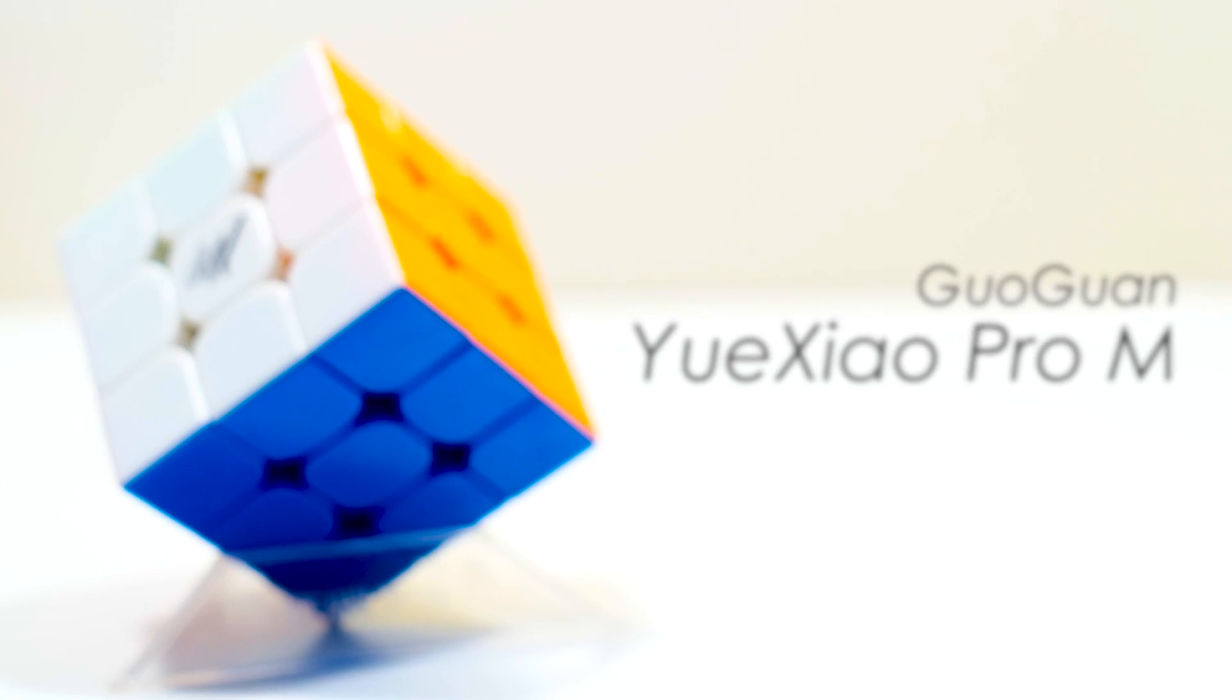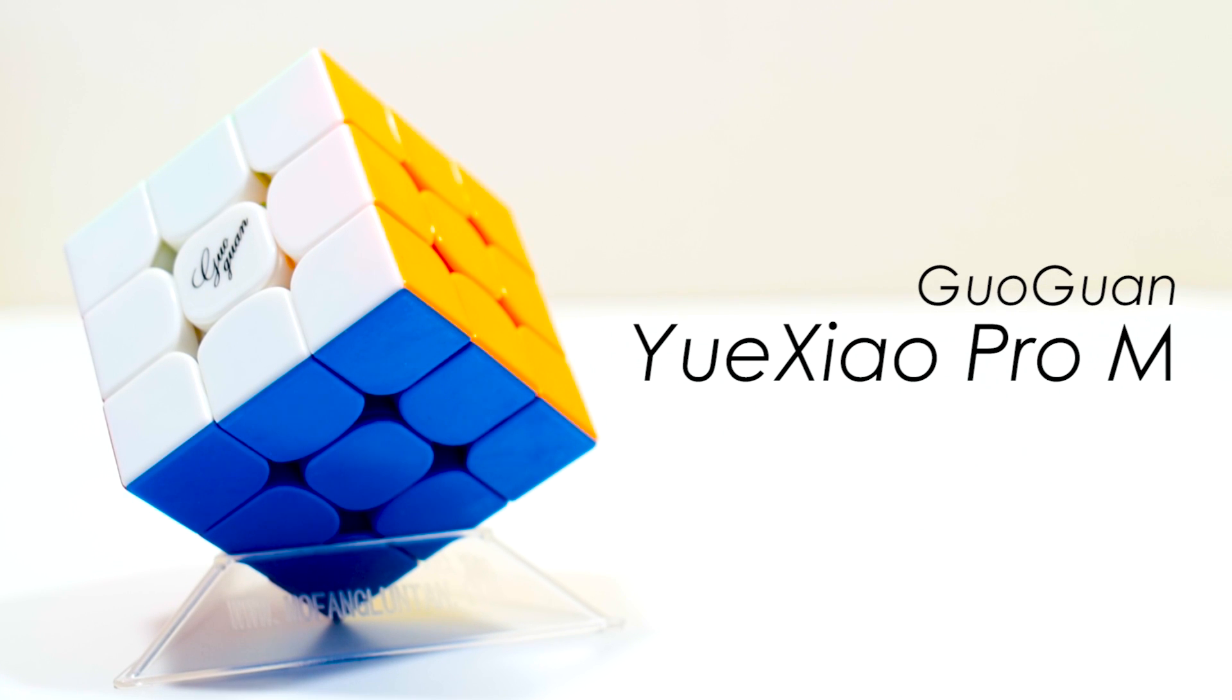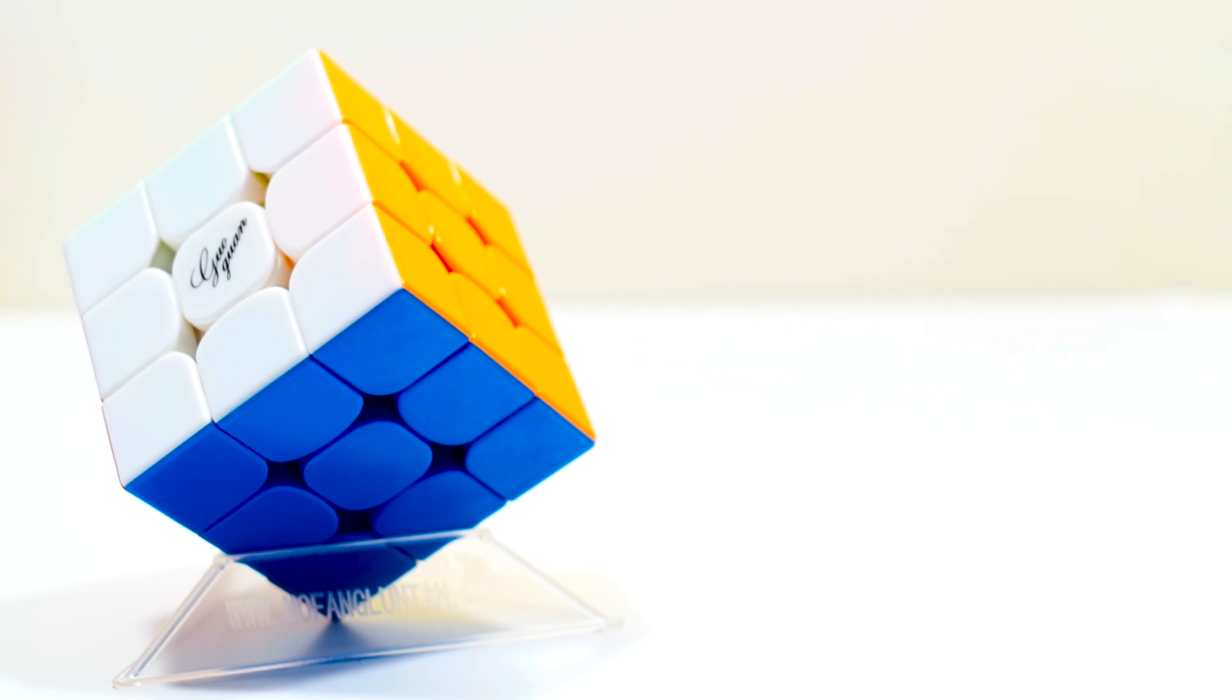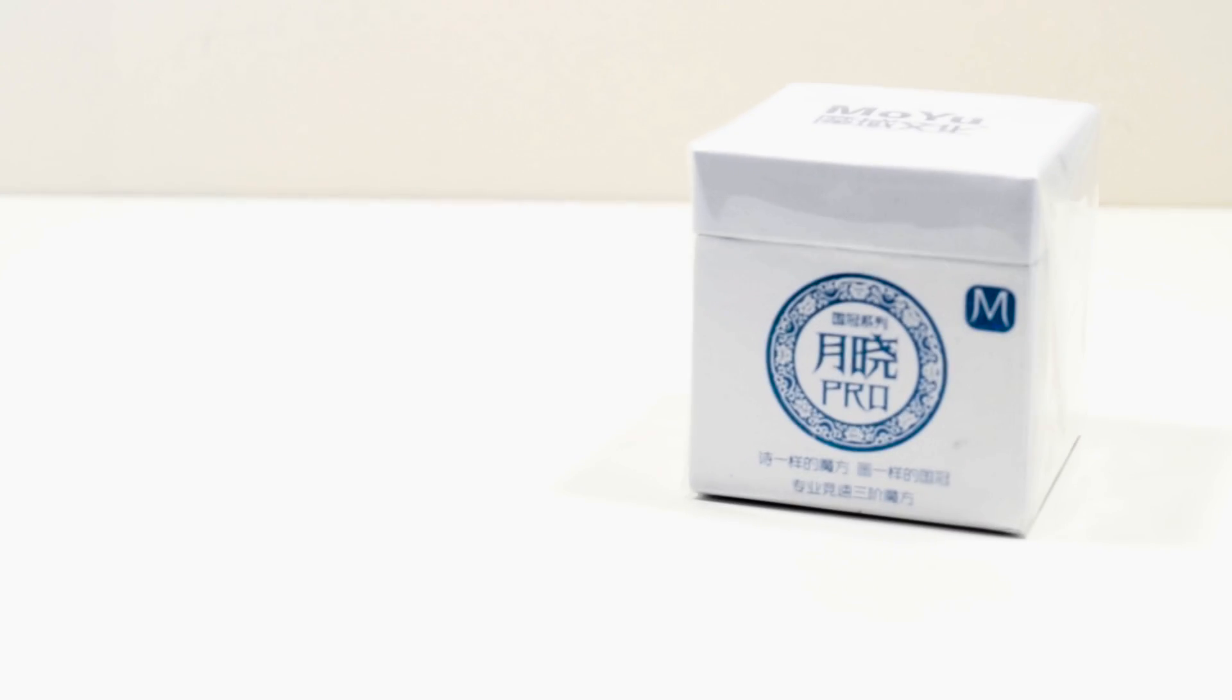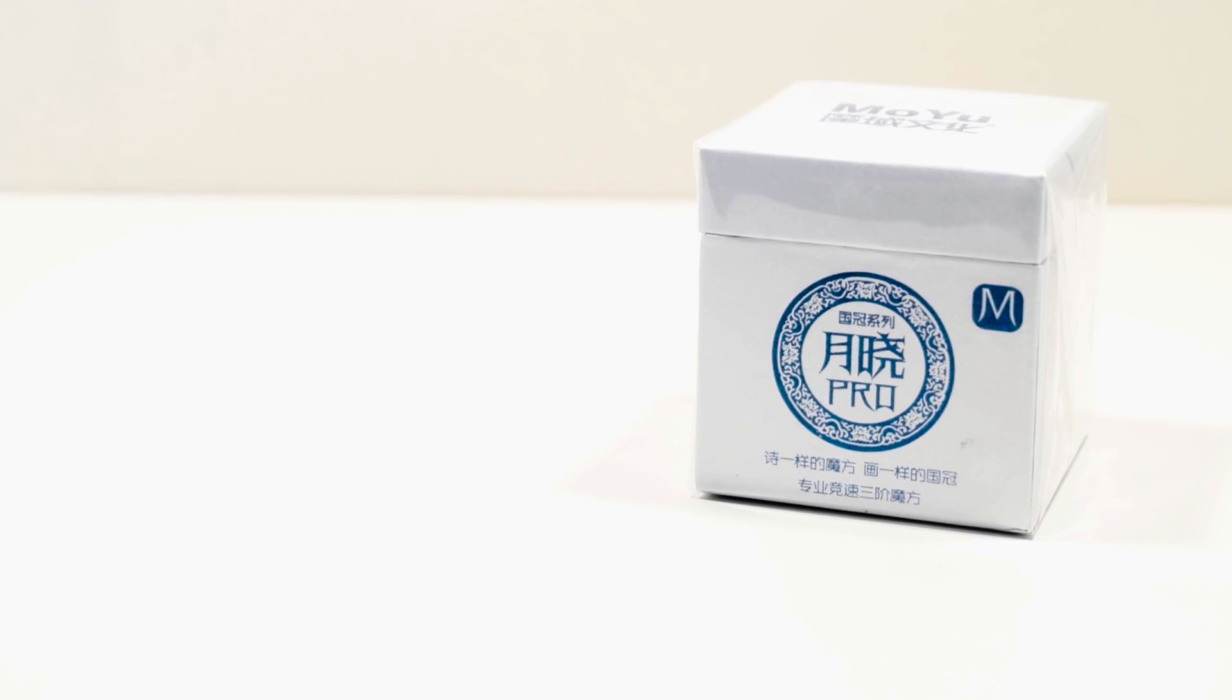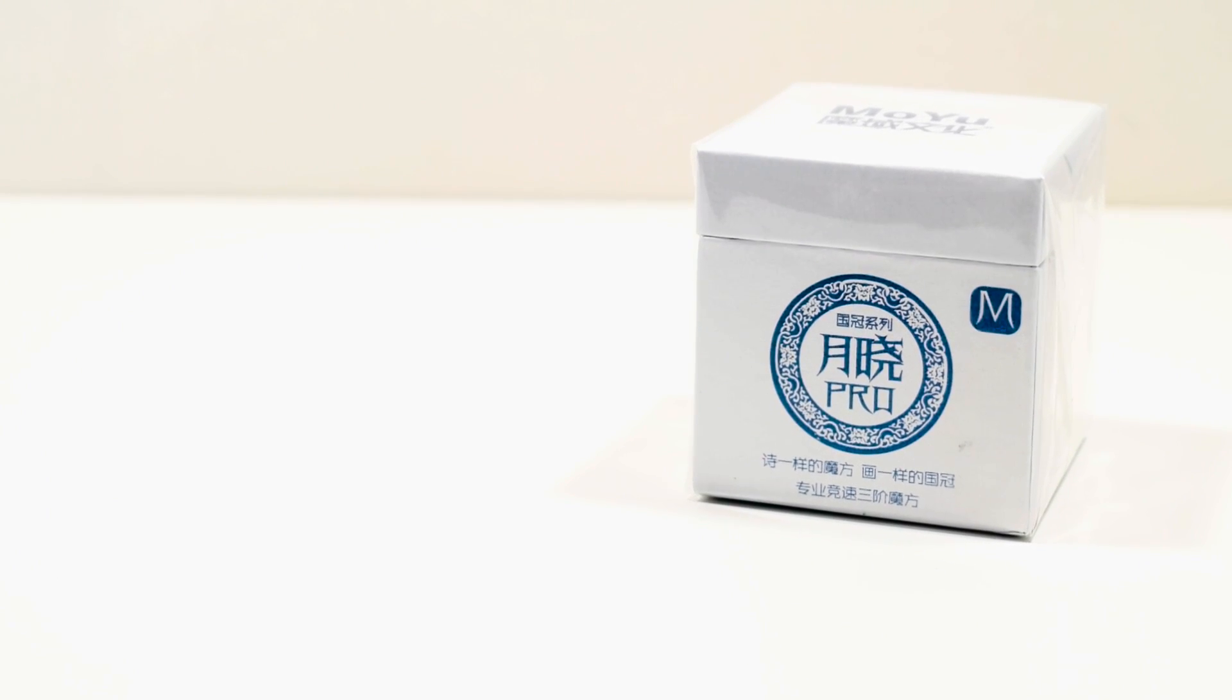In 5th place we have the GuoGuan Yuexiao Pro M. This cube is the one that most people will probably disagree with me on, but from the beginning it was one of my favorite puzzles. Like most puzzles on this list, it comes in premium packaging with a bunch of add-ons, meaning it does come at a more expensive price.